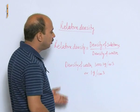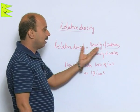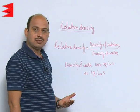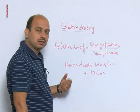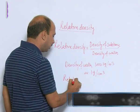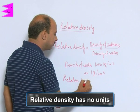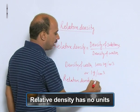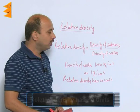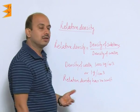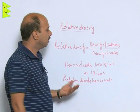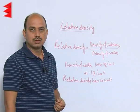The density of substance can be obtained by knowing the relative density. Relative density is just a pure number, it has no unit. By knowing relative density, we can decide whether the body will sink or float in the given liquid.